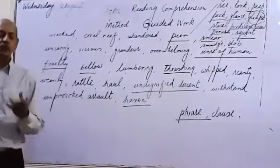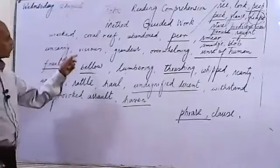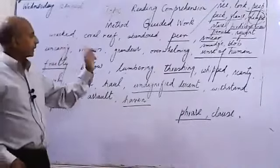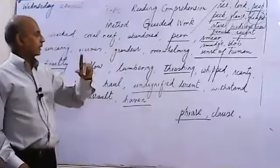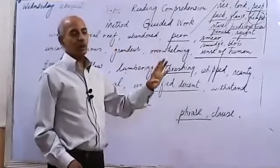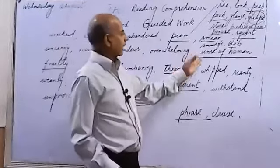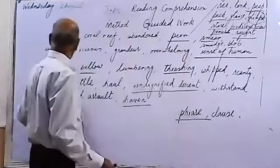Then the word is 'uncanny' - if something is uncanny it is strange, unusual. Then some other words: vicious means evil, grandeur means beauty, overwhelming means strong, overpowering, overcoming, and sense of human frailty.